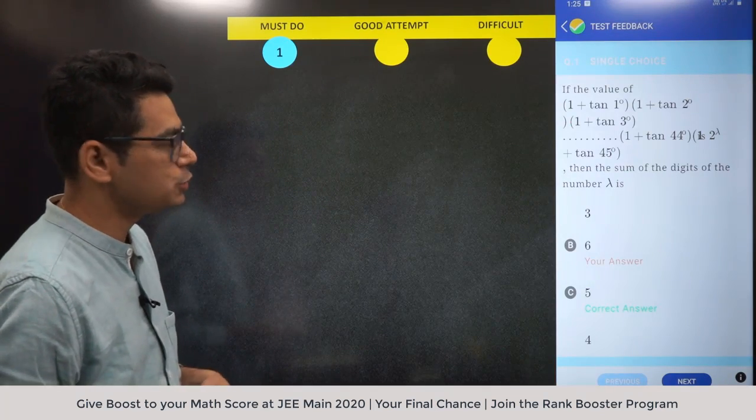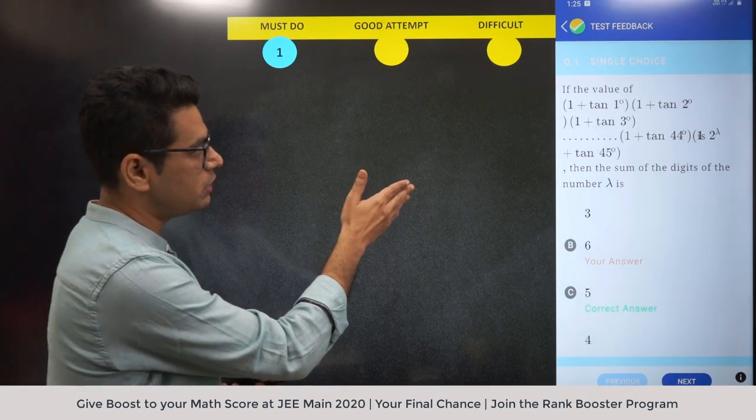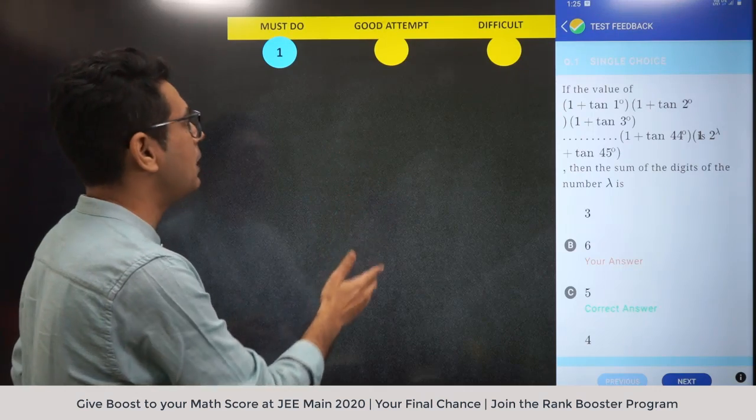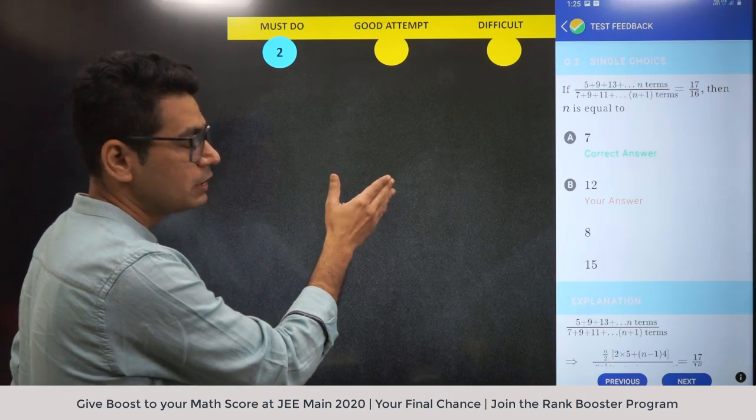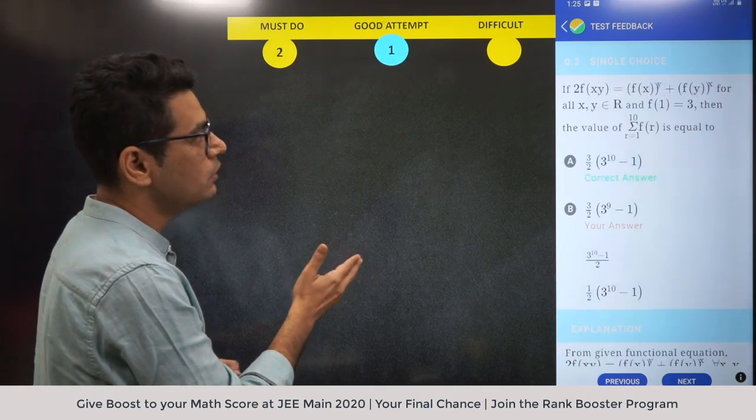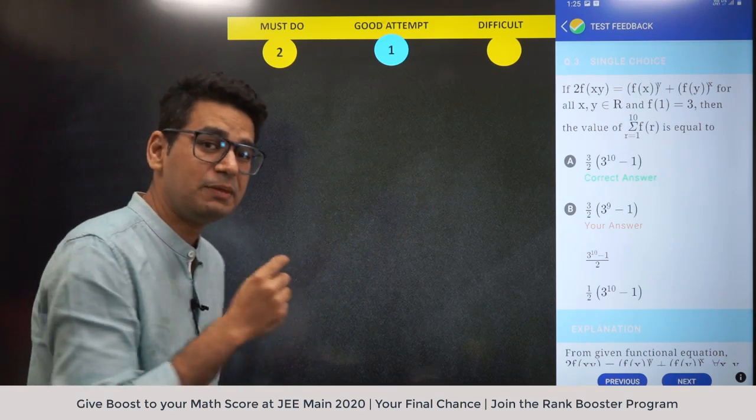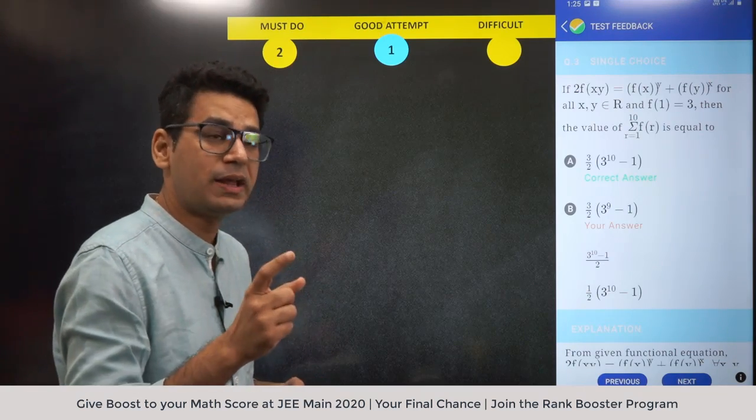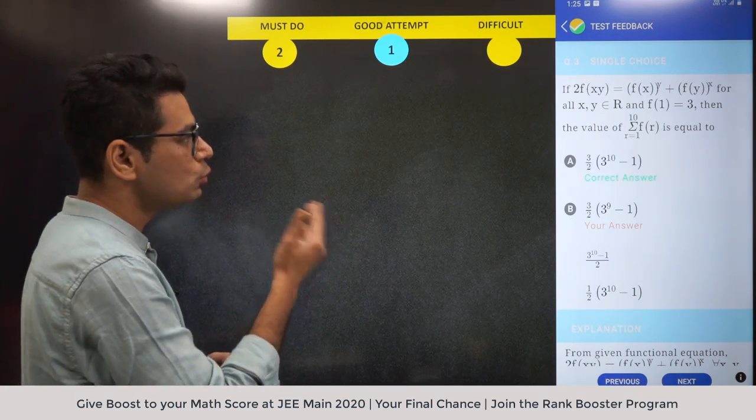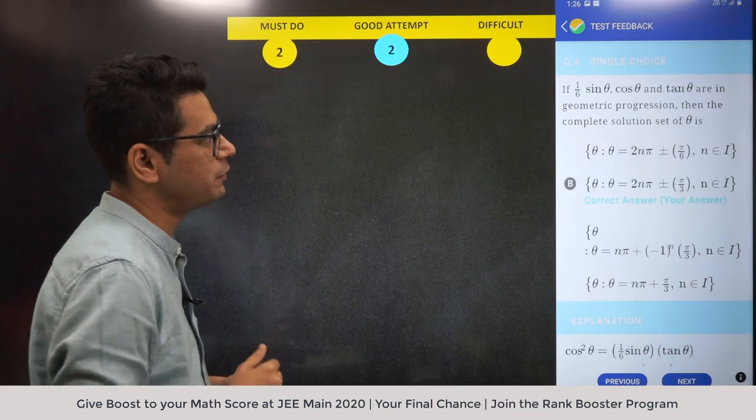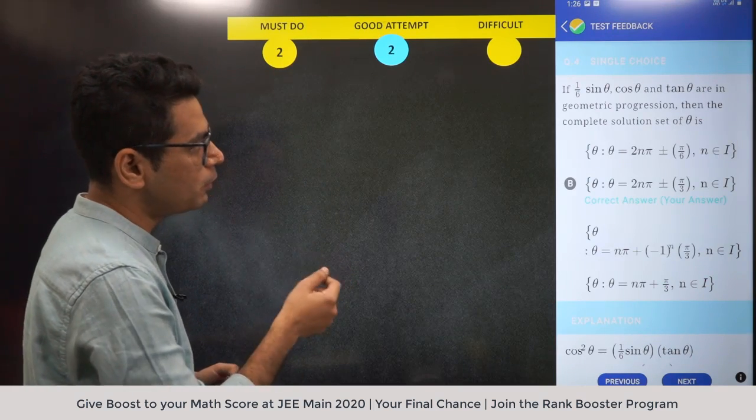Let's start. First question - trigonometry lollipop question, even class 10th students study this, must-do. Next question - sequence and series, must-do. Next question - good attempt, function question from NCERT class 11th. Three raised to power x type question - I'm not putting in must-do though it's one-to-one, many might shift it there. Next question - geometric progression.